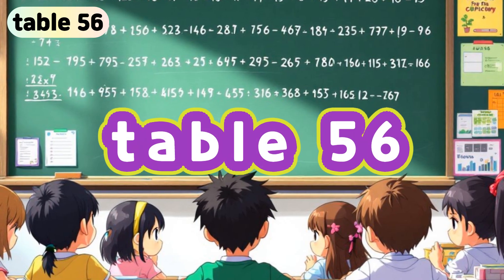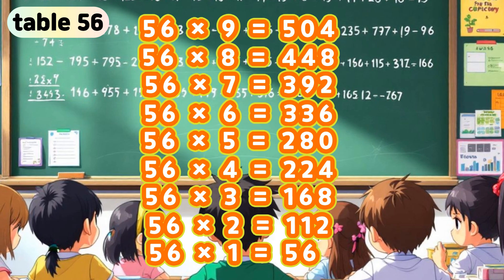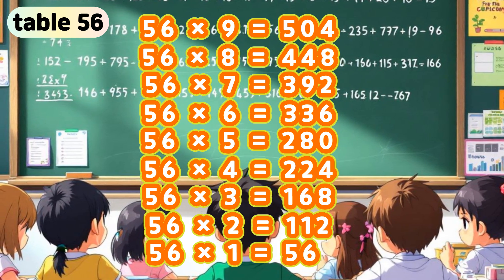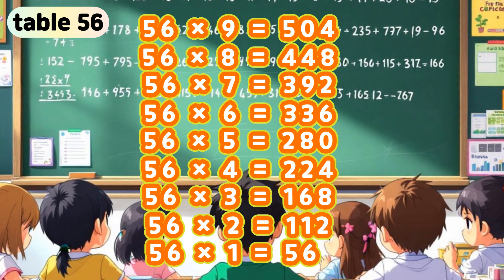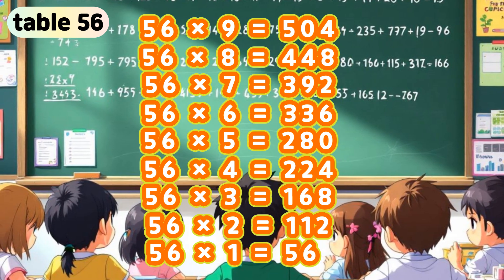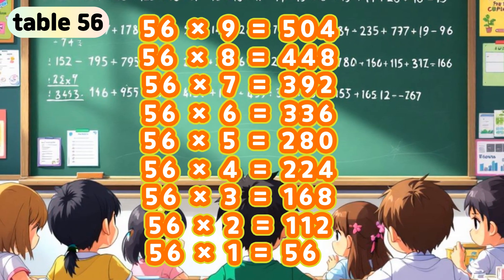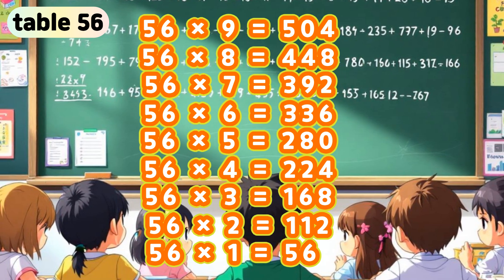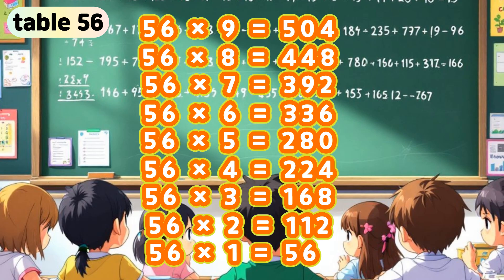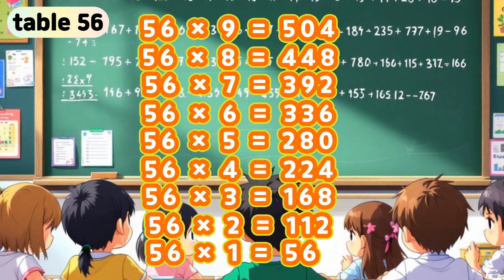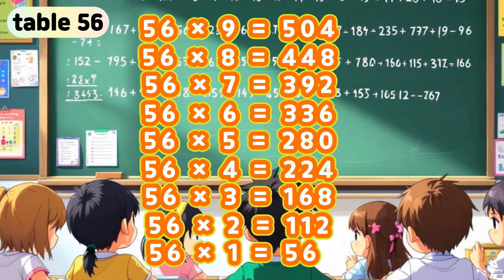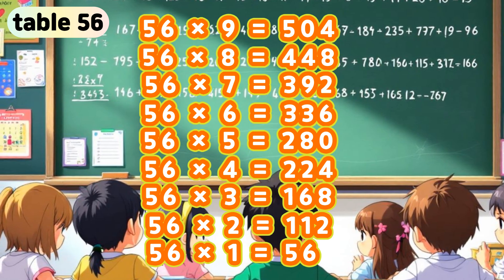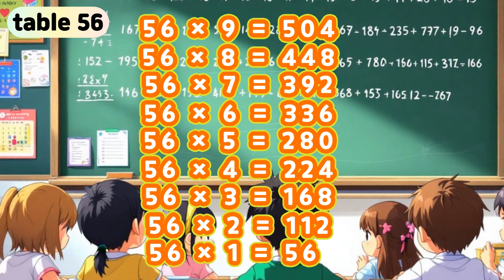Table 56. 56 times 9 is 504. 56 times 8 is 448. 56 times 7 is 392. 56 times 6 is 336. 56 times 5 is 280. 56 times 4 is 224. 56 times 3 is 168. 56 times 2 is 112. 56 times 1 is 56.